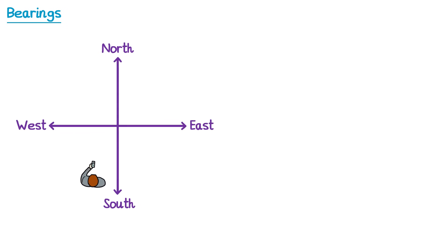Let's imagine that you were stood at the centre of this compass, and I've placed a phone in your hand to indicate which direction you're facing. So you're going to start by facing north. We're going to assign north an angle of 0 degrees. If we then turn to face east, we've turned through one quarter of a turn. A quarter of a turn is 90 degrees, so we're going to assign the angle 90 degrees to east.